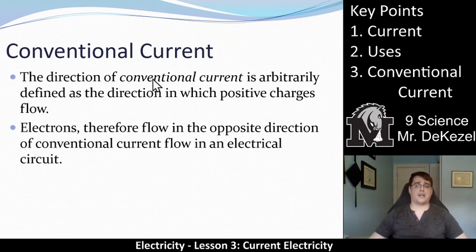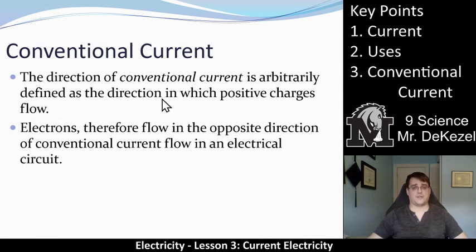Conventional current, again, the direction of conventional current is arbitrarily defined as the direction in which positive charges flow. Now, positive charges don't flow. Electrons flow. Negative charges flow. That's why this idea is very, very counterintuitive, but very important for the way that we talk about electricity.